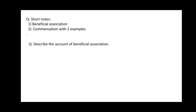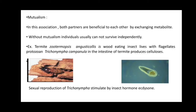Short notes on this topic may include beneficial association and commensalism with two examples. The next topic is mutualism — in this association, both partners benefit from each other by exchanging metabolites. Without mutualism, individuals usually cannot survive independently, so both partners require this association. Example: termites — wood-eating insects that live with the flagellate protozoan Trichonympha.